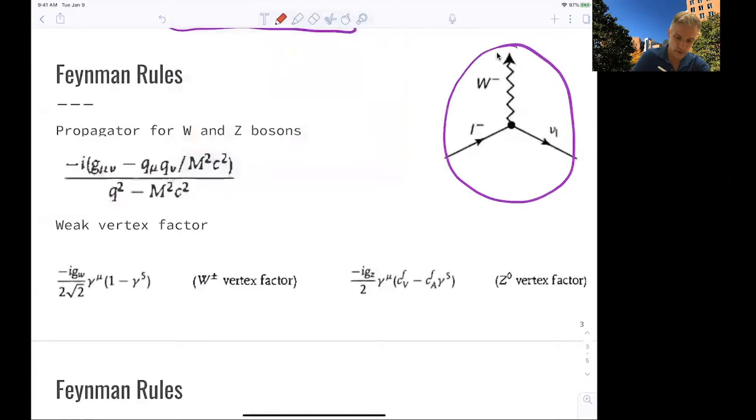This vertex vector now looks a little bit more complicated than for QED and QCD because the W boson and the Z boson carry mass. So we have the additional factors, Q² minus M², and this Q² over M² term as well. One interesting fact about this vertex vector is what happens now if Q² is much, much smaller than M².